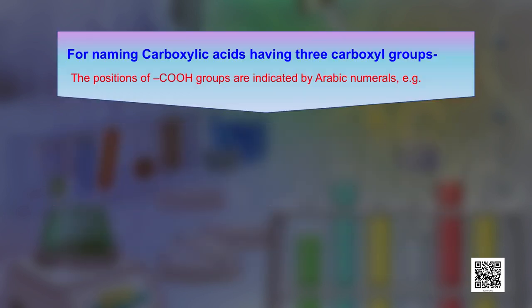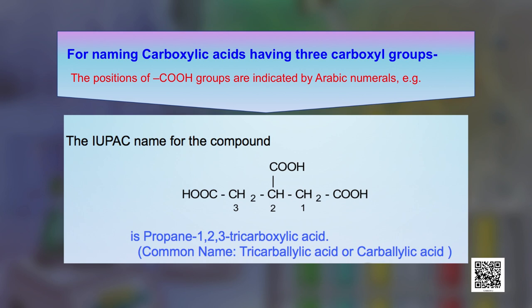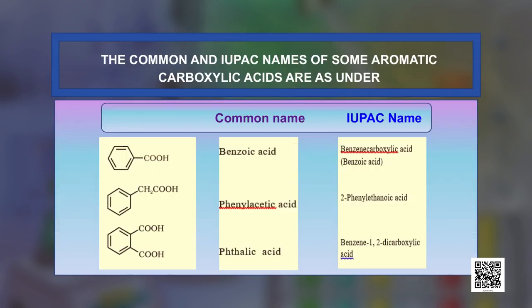For carboxylic acids having 3 carboxyl groups, the positions of the COOH groups are indicated by Arabic numerals. The IUPAC name for the compound shown here is propane-1,2,3-tricarboxylic acid, and its common name is tricarballylic acid or simply carballylic acid. There is also a category of aromatic compounds, for which IUPAC names are given in the table along with their common names.